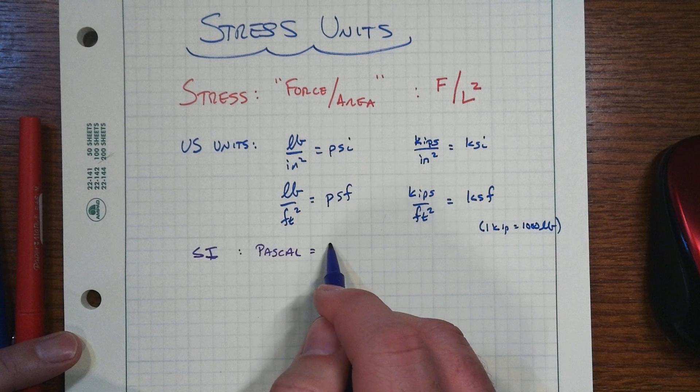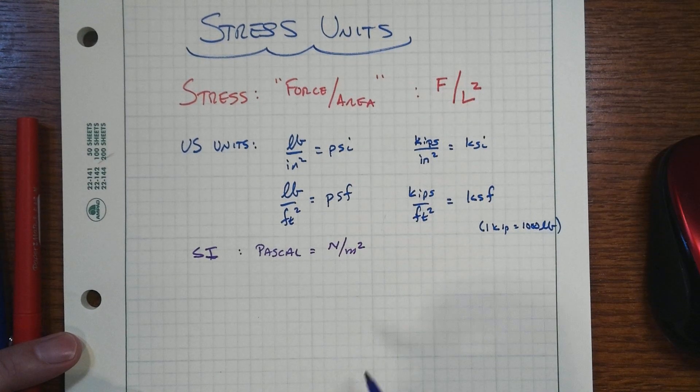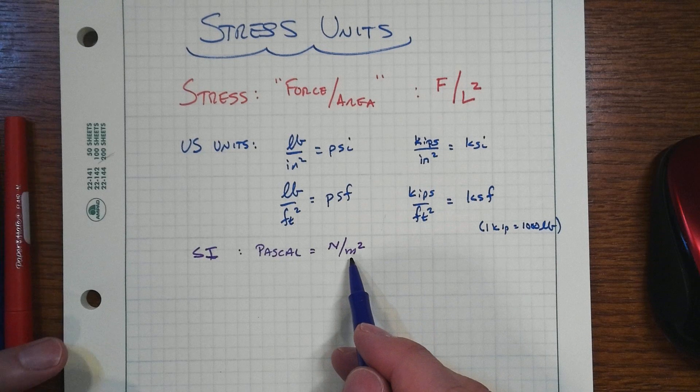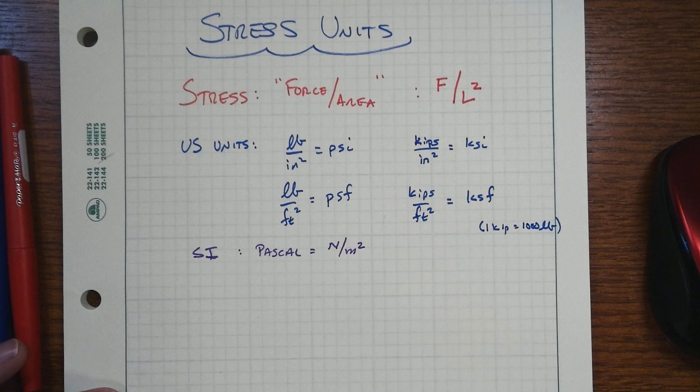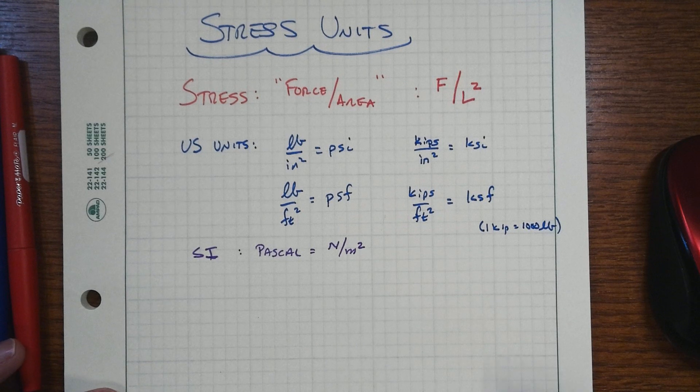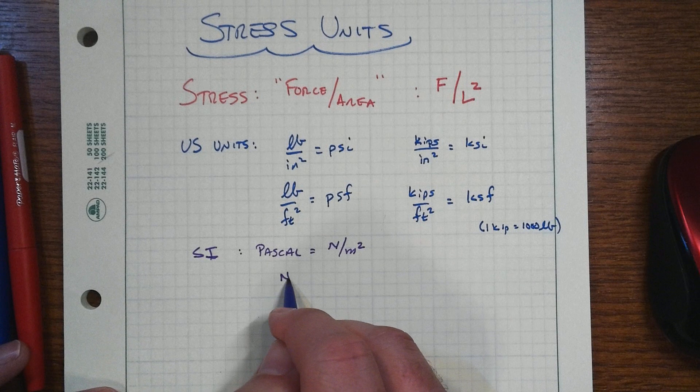And a Pascal is, by definition, a newton per square meter. Now, our cross-sectional areas of our structural members are not as big as one square meter. So this really is not a very convenient scale at all. So let's do a little units conversion and see how this might play out.